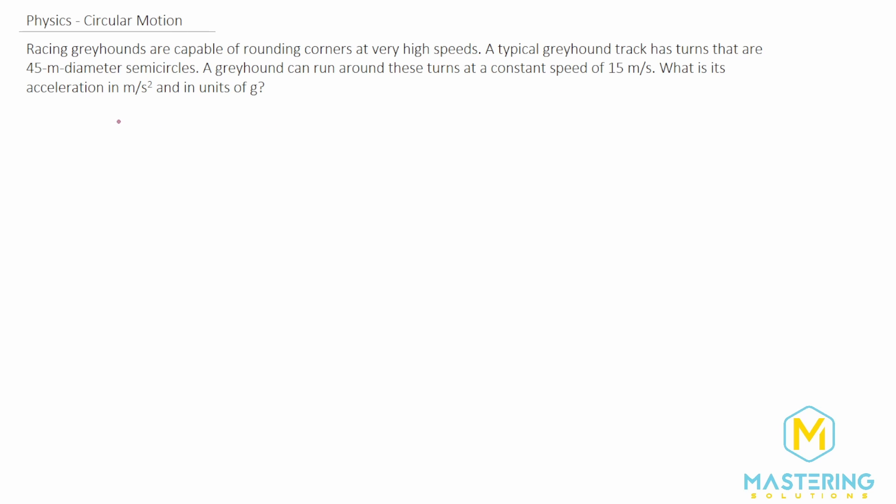What is the acceleration in meters per second squared and in g's? So we want acceleration, and they tell us that the velocity is constant at 15 meters per second, and that the track is 45 meters in diameter.